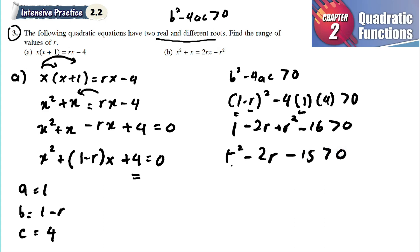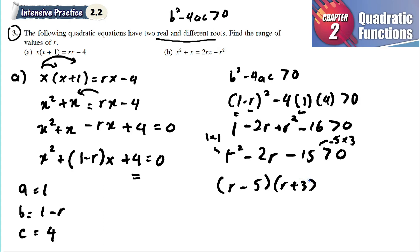Simplifying: r squared minus 2r minus 15 larger than zero. We factorize: 15 is 5 times 3, and negative 5 plus 3 gives negative 2, so we get (r minus 5)(r plus 3) larger than zero. Setting each factor to zero: r equals 5 and r equals negative 3. These are the critical values.